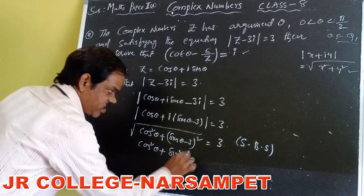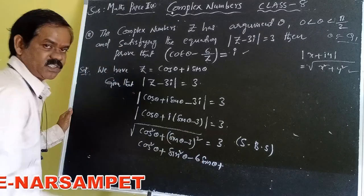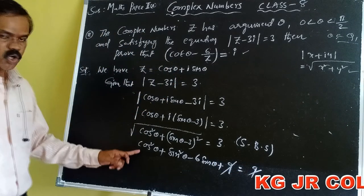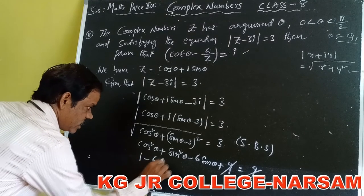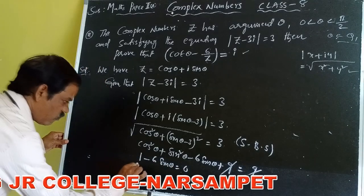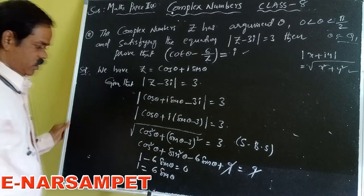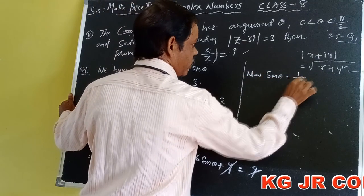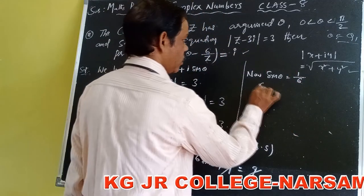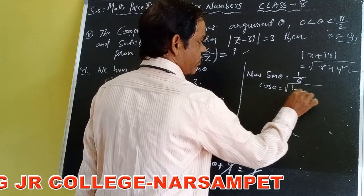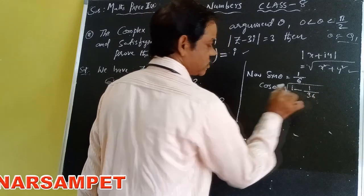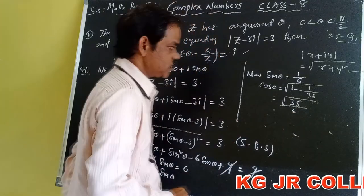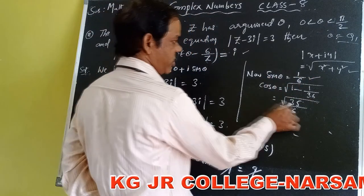Expanding: cos²θ + sin²θ − 6sinθ + 9 = 9. Since cos²θ + sin²θ = 1, we get 1 − 6sinθ = 0, so sinθ = 1/6. Then cosθ = √(1 − sin²θ) = √(1 − 1/36) = √(35/36) = √35/6. So sinθ = 1/6 and cosθ = √35/6.